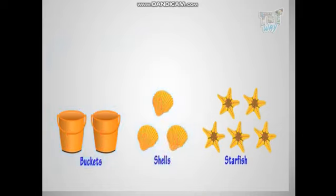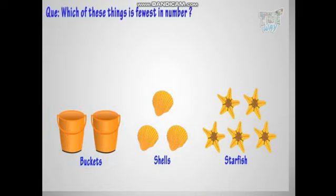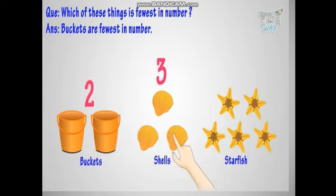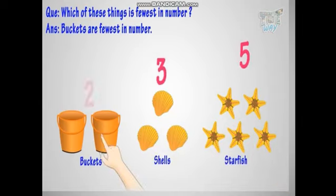Now, which of these things is fewest in number? Buckets are fewest in number. Buckets are two, shells are three, and starfish are five. Hence, buckets are the fewest in number.